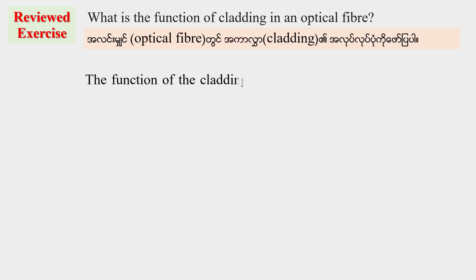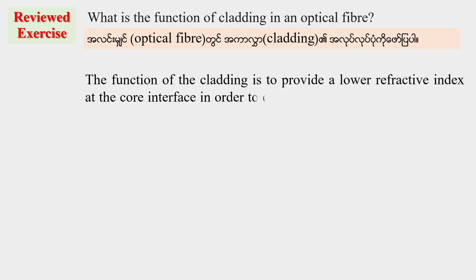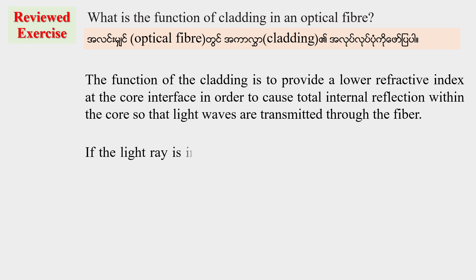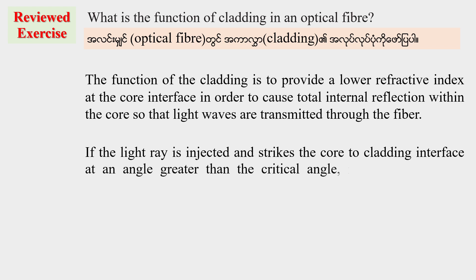The function of the cladding is to provide a lower refractive index at the core interface, so that light waves are transmitted through the fiber. If the light ray is injected and strikes the core interface at an angle greater than the critical angle, it is totally reflected back into the core.